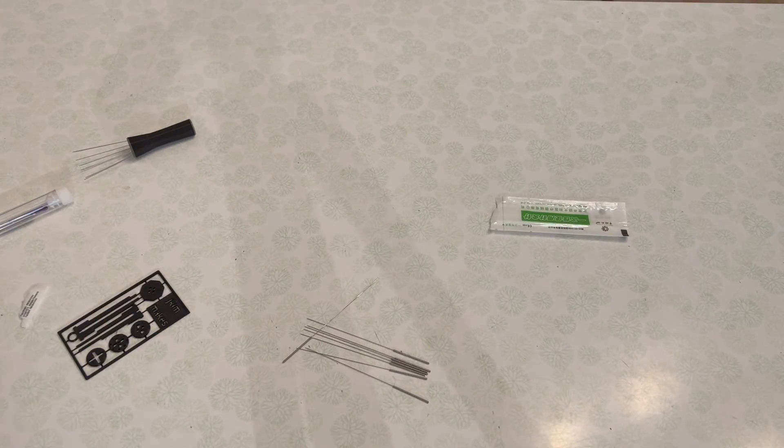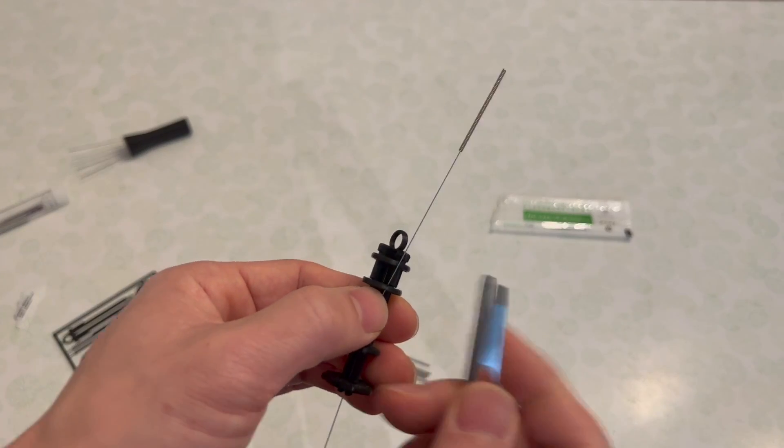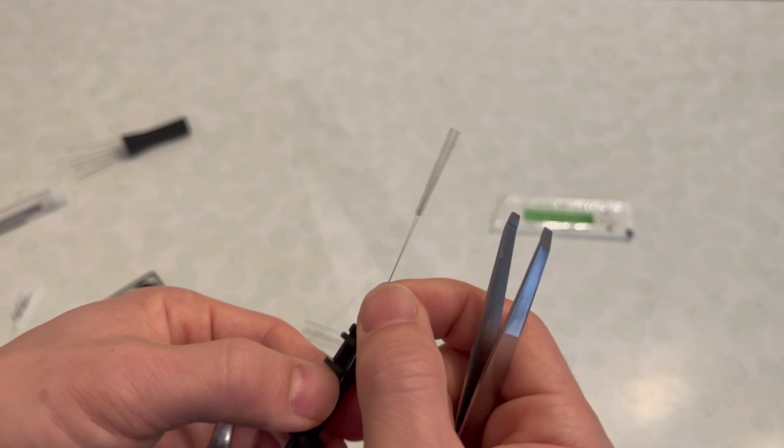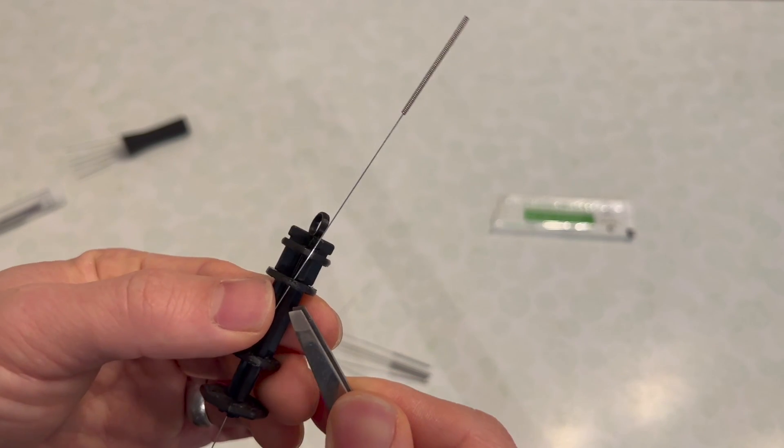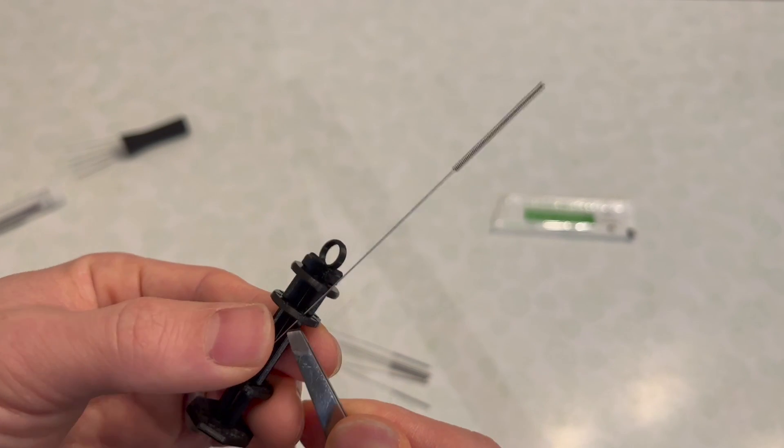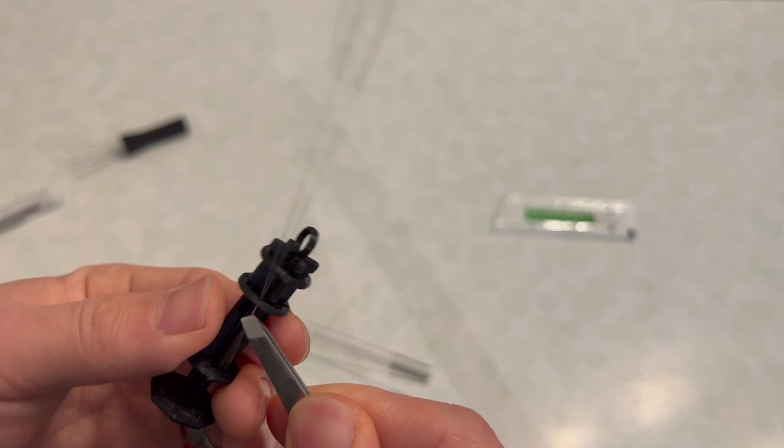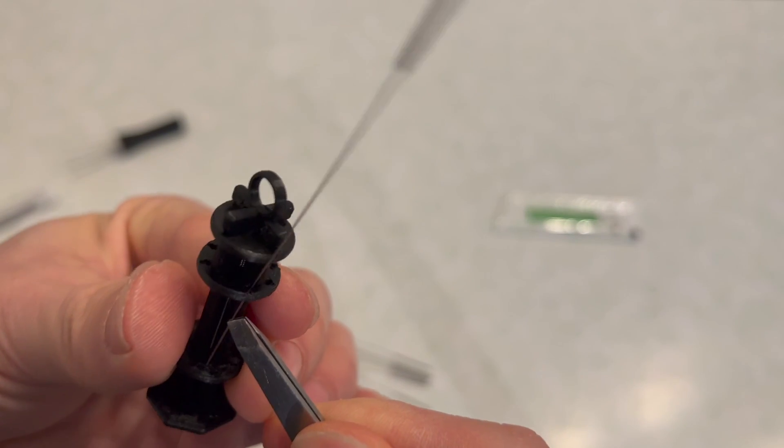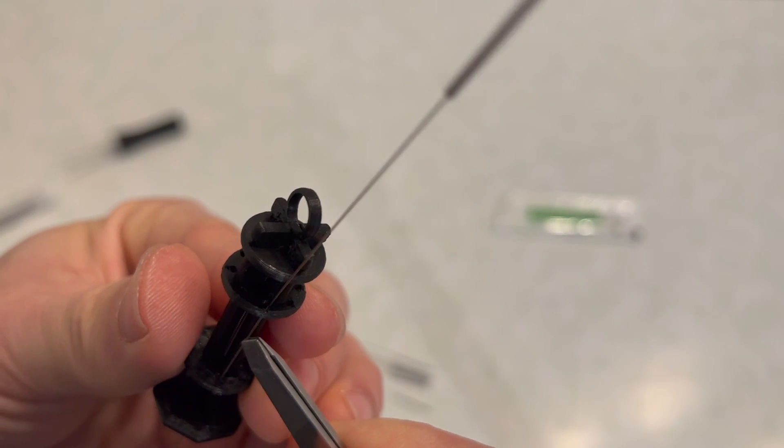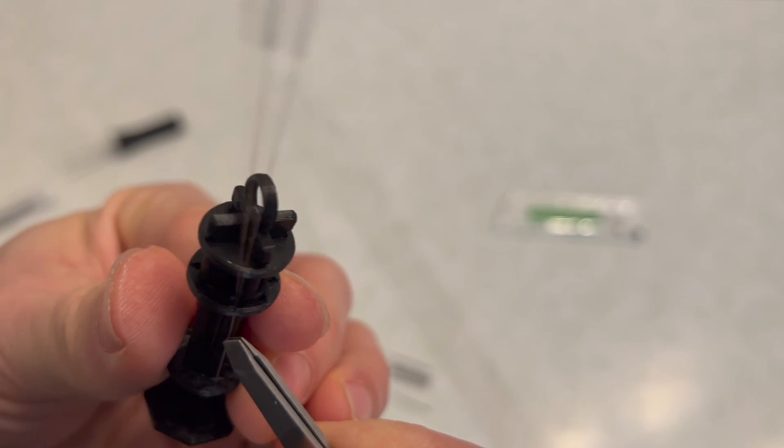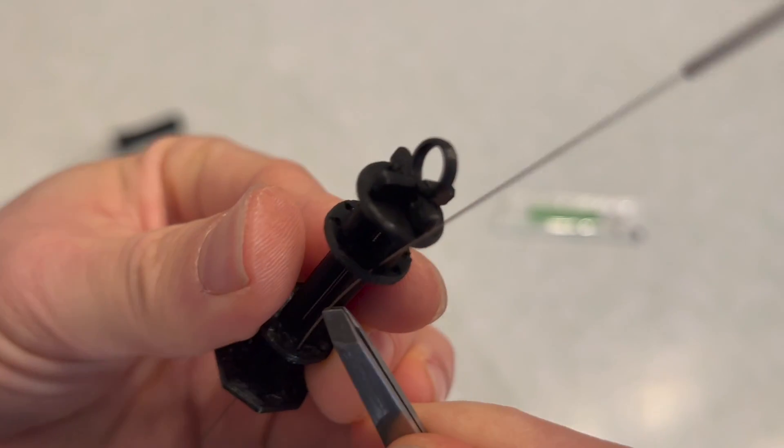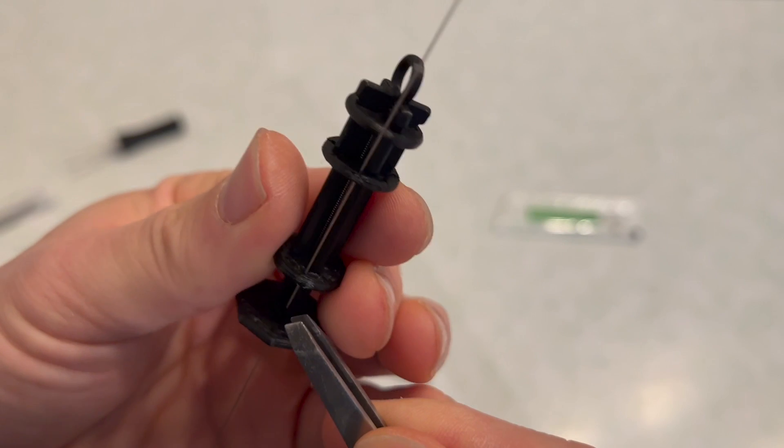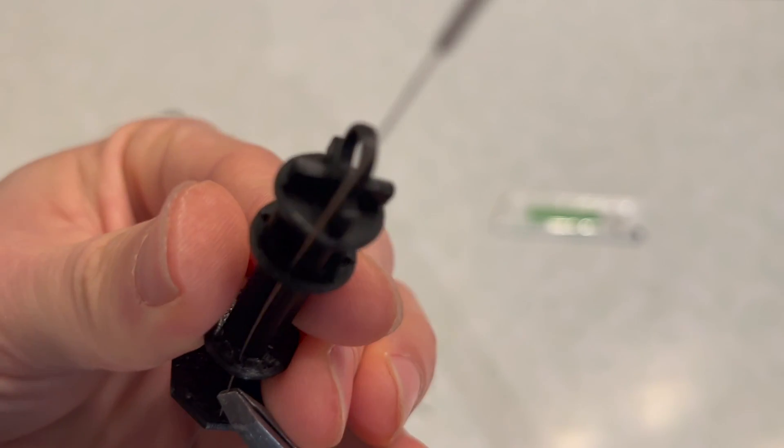This is something that's lost when you optimize - whenever you optimize anything, you have to make concessions for that optimization. In this case, the concession is ease of installation. So you want to grab some tweezers and just push it through these holes in these smaller frame pieces.